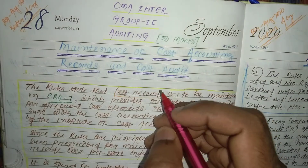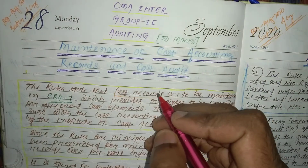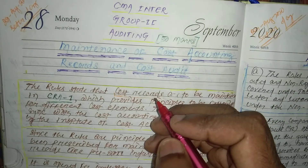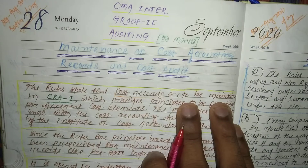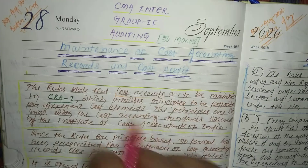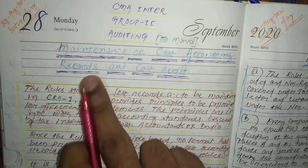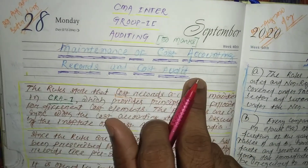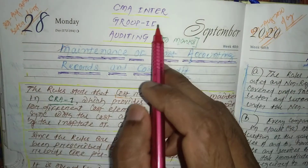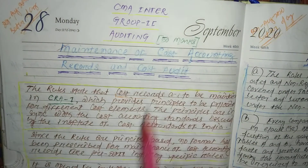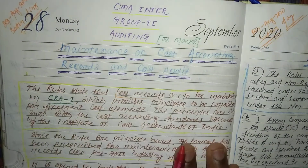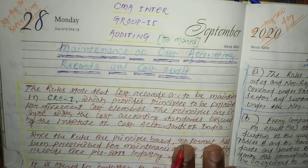In this video, I would like to discuss one important topic: maintenance of cost accounting records and cost audit. This is from CMA Inter Group 2, auditing section. This topic is very important for your examination if you are a CMA student preparing for your upcoming examinations.